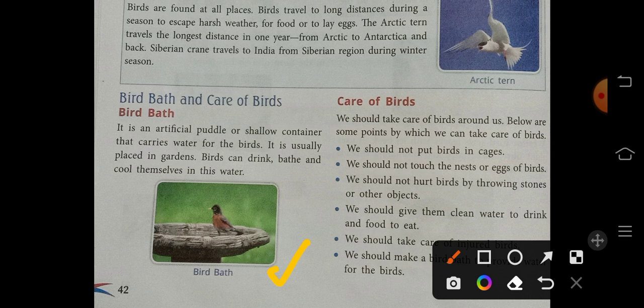It is an artificial puddle or shallow container that carries water for the birds. Can you see the picture? It's a container, and inside this container we have to pour water for the birds. Usually this container will be placed in a garden.